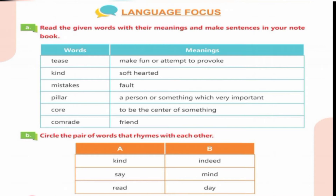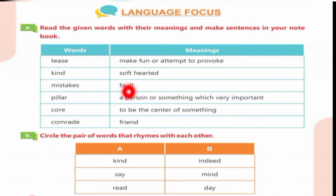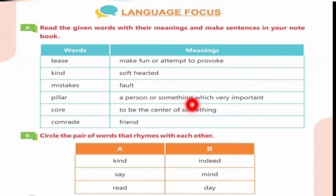'Kind' means soft-hearted. My father is very kind. 'Mistakes' means fault. My mother overlooks our mistakes. 'Pillar' means a person or something which is very important.